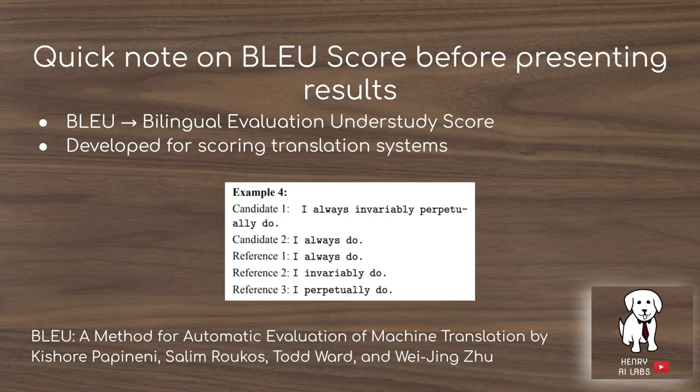Before presenting the results, just a quick note on the BLEU score and what this is. It's a technique developed in 2002 to evaluate neural machine translation systems. It's basically an n-gram evaluation system with some reference sentences.